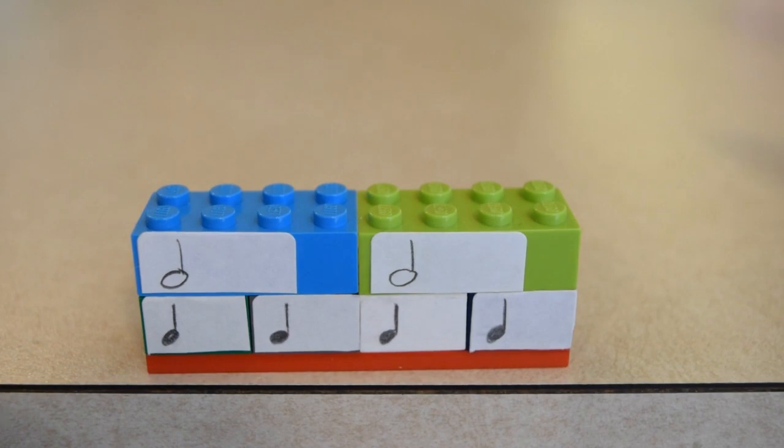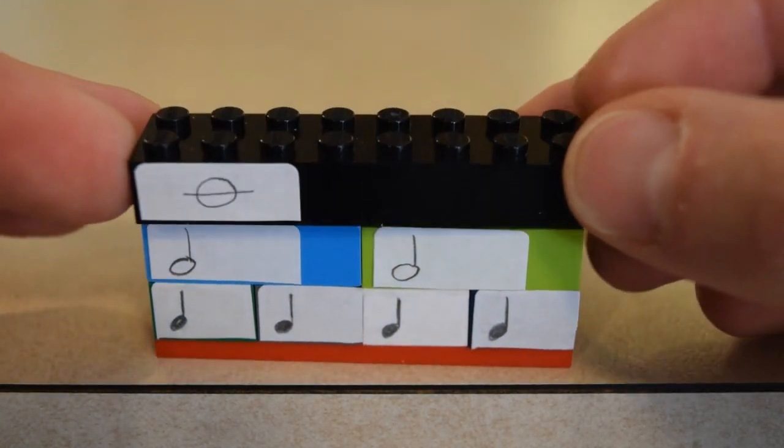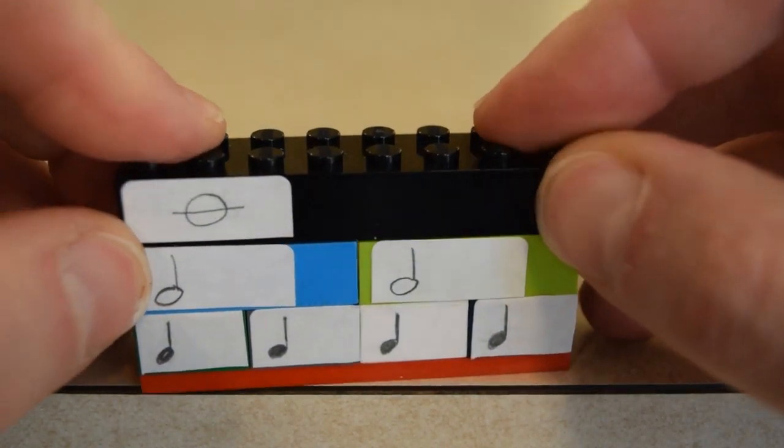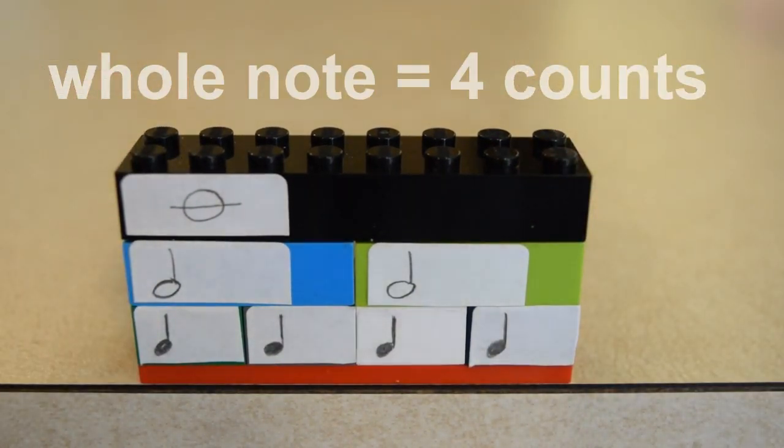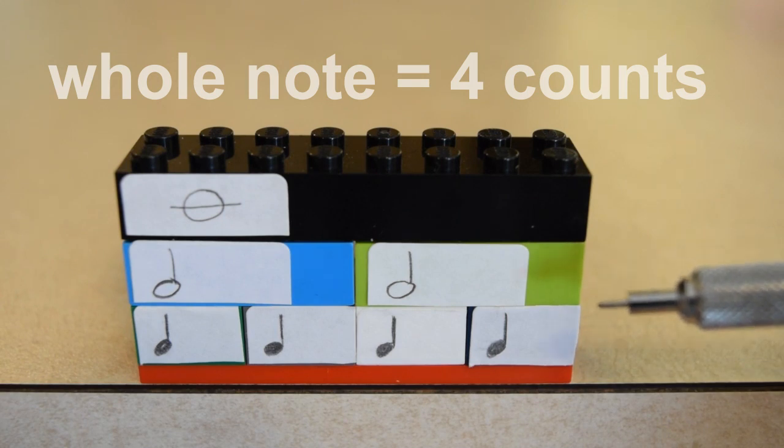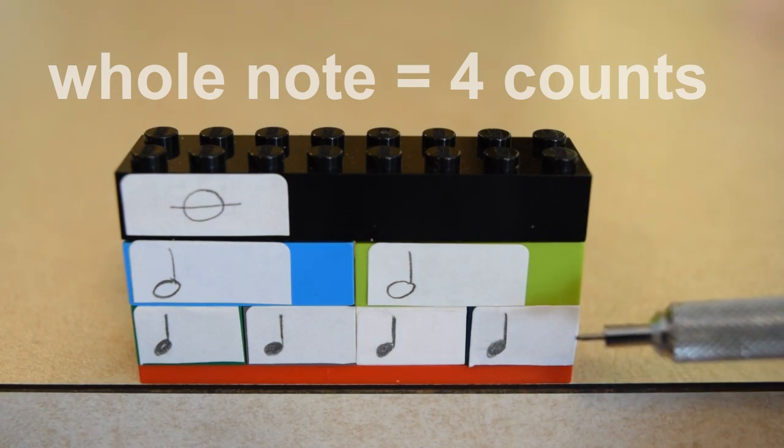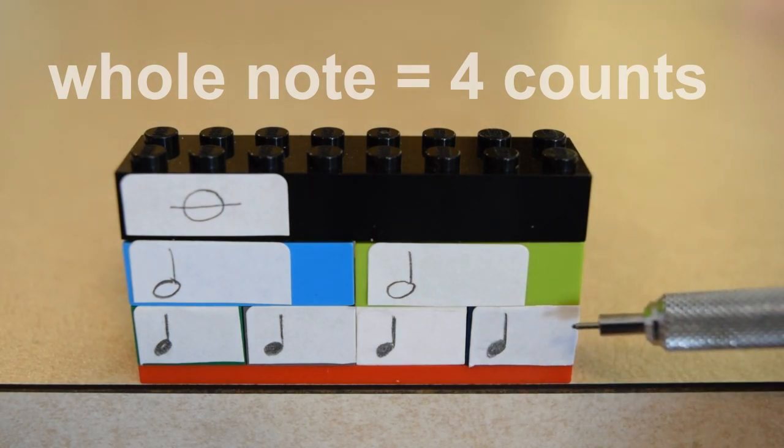What happens when you combine two half notes? Well, two plus two is four, and we get a whole note. So we can place that right on top, and this really also shows that a whole note is worth two half notes, but it's also worth four quarter notes.